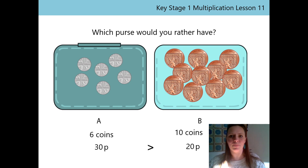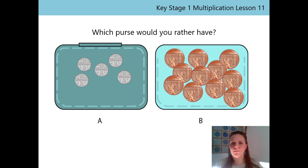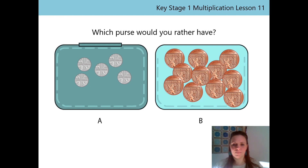Thanks for helping me with that problem. It's your turn now. Which purse would you rather have? Have a little look at the two purses. What's the same as last time? That's right, we still have 5p coins and 2p coins. What's different? That's right, we have a different number of coins in each purse. So what's the total of each purse? Pause the video while you work it out. Then we'll have a look at it together.